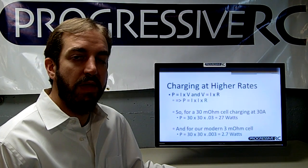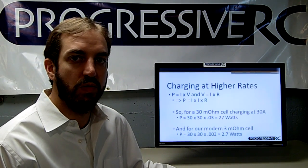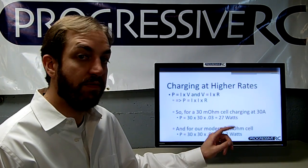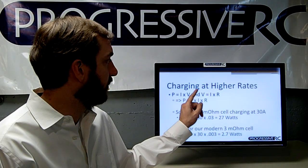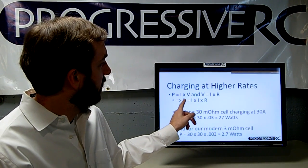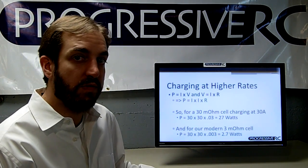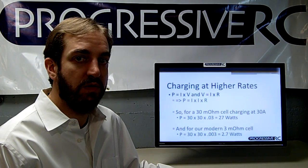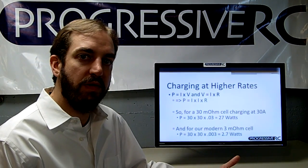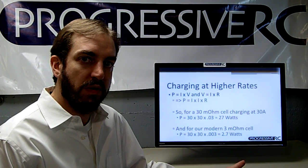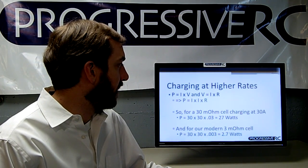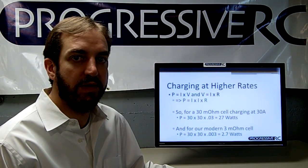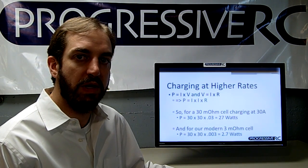Internal resistance also affects charging at higher rates — a question we often get asked. In the past, a battery might have had 30 milliohm internal resistance, whereas now that same cell may have 3 milliohms. Recalling that power equals current squared times resistance, if you're charging at 30 amps with the old 30 milliohm cell, it's dissipating 27 watts internally as heat, causing the battery to heat up and decreasing cycle life. With the modern 3 milliohm cell at the same 30-amp charge, it only dissipates 2.7 watts — heat that is much more easily dissipated across the battery's surface area without decreasing cycle life.